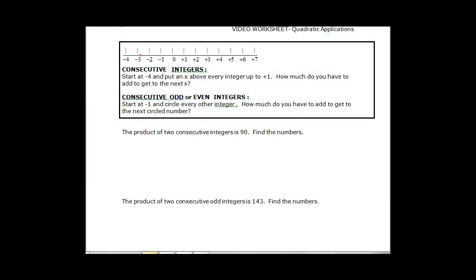This video will talk about consecutive integers and applications of quadratics. Consecutive integers would be like starting here at negative 4 and then we want to put an X above every number or integer up to 1, just for examples.